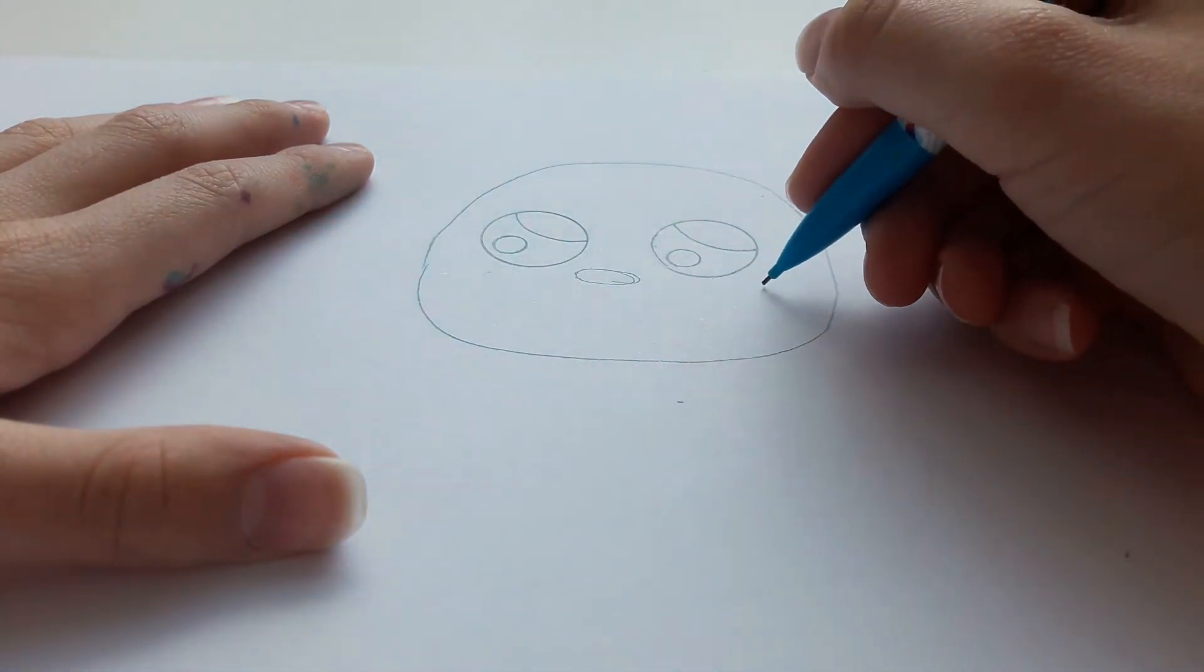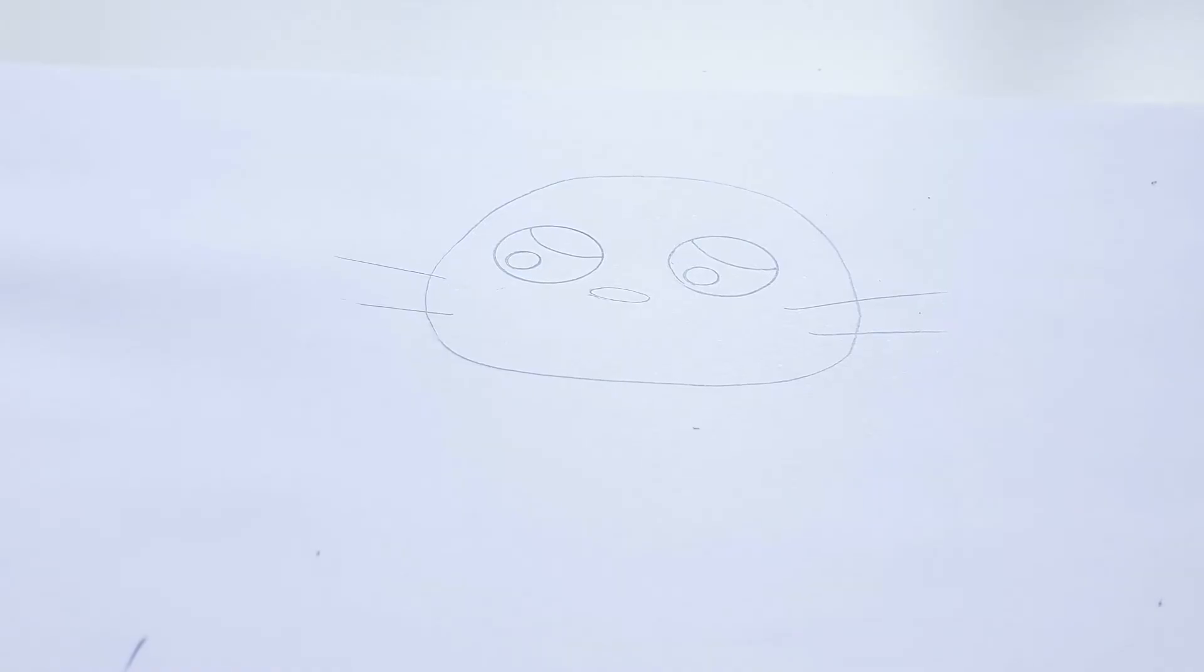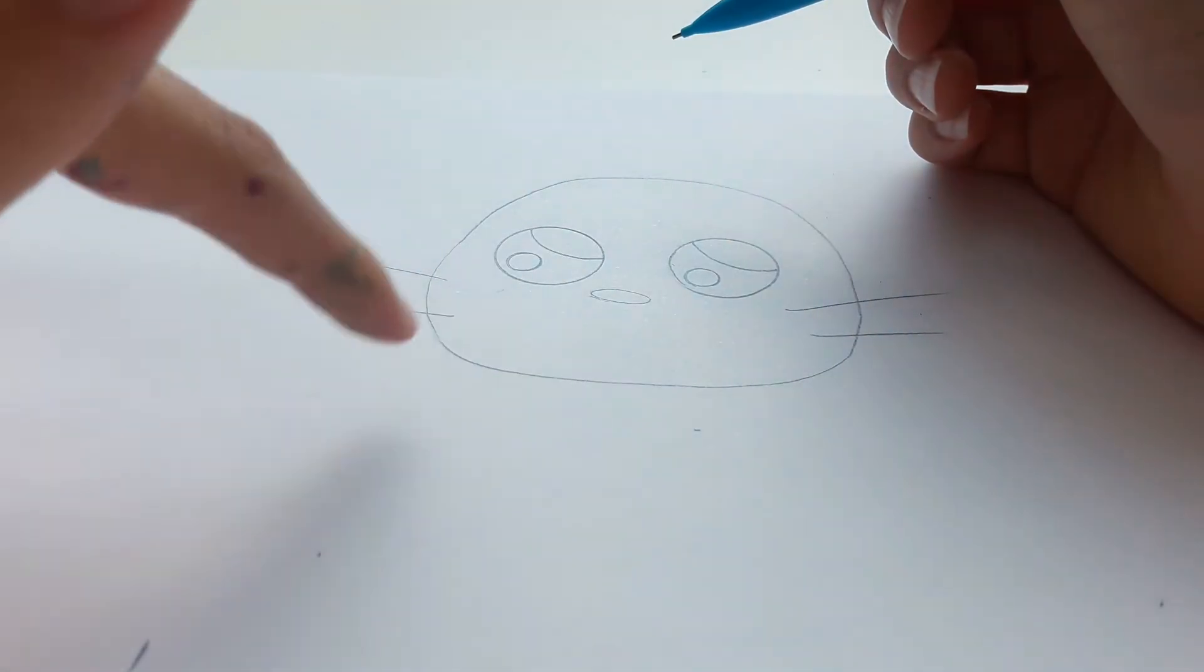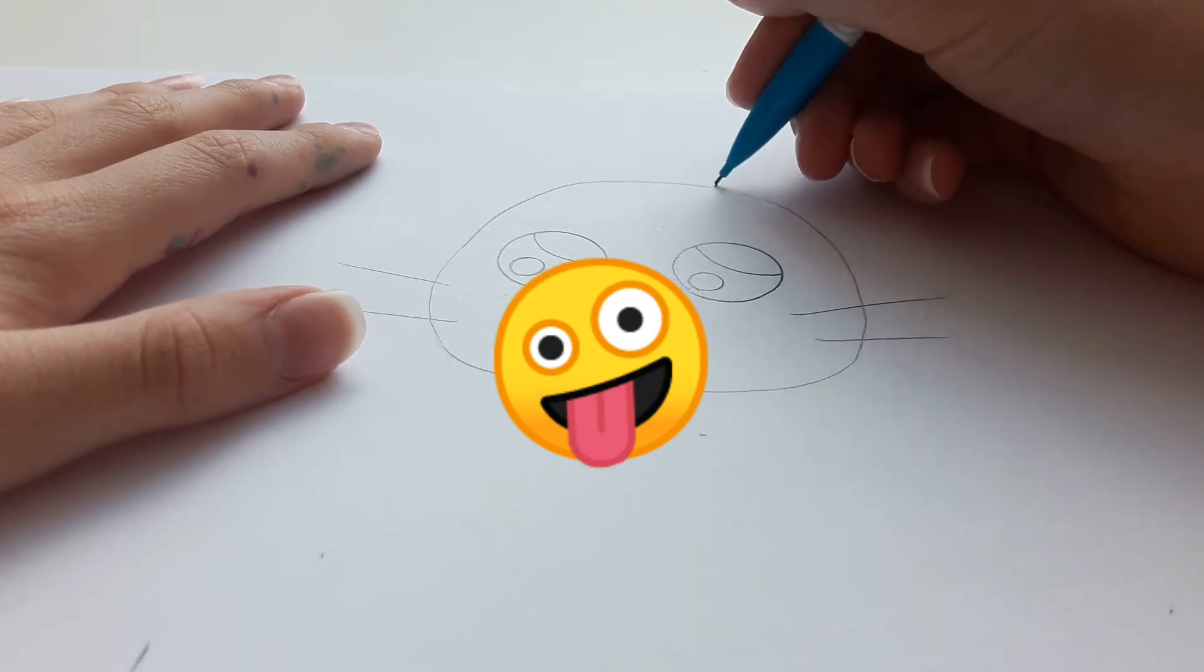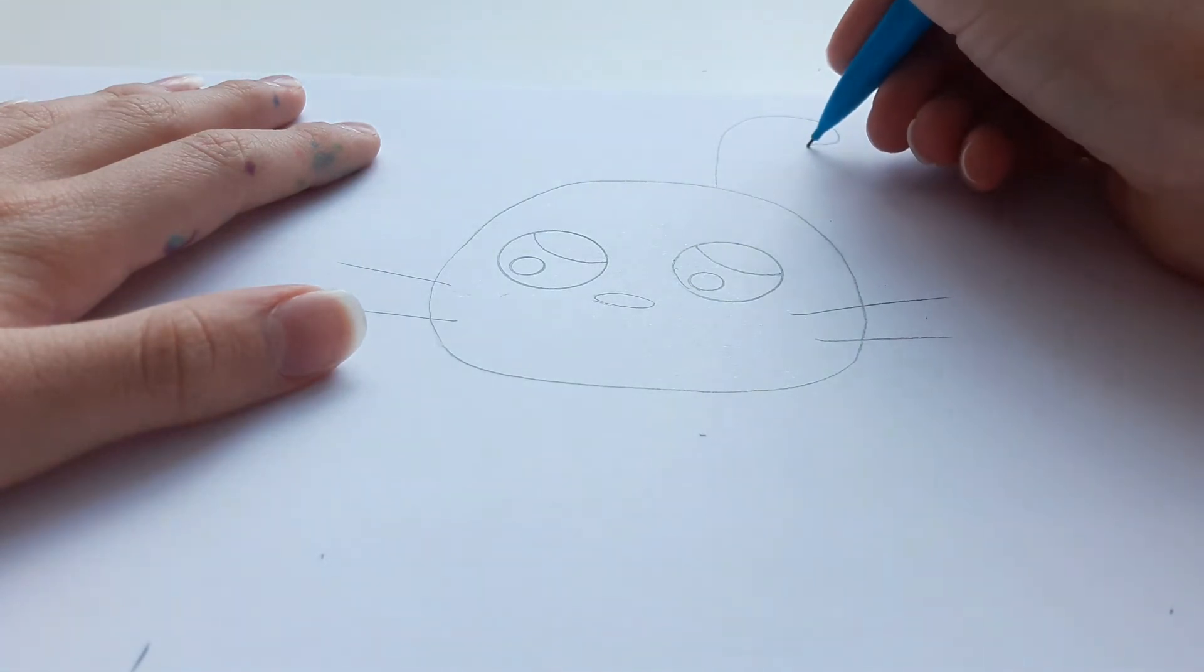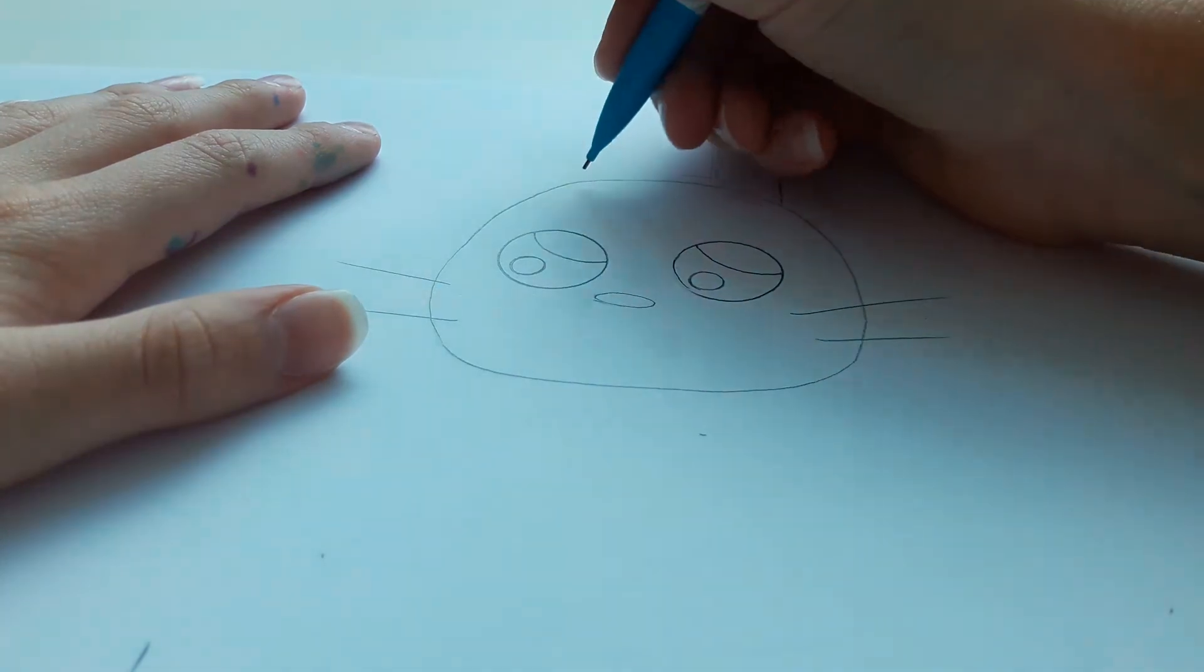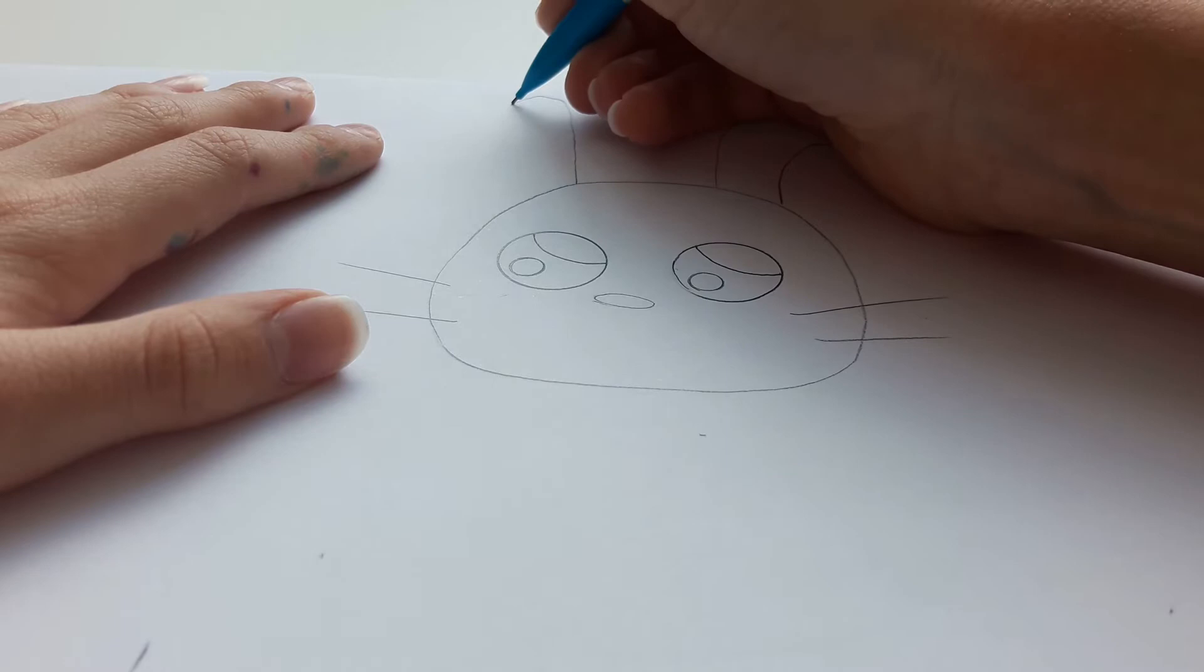And fix it like that. Now we are going to do the most important thing that is going to make our bunny an actual bunny, so we are going to add the bunny ears. Just going to go up, kind of curve and back down, and same thing here, up and down.